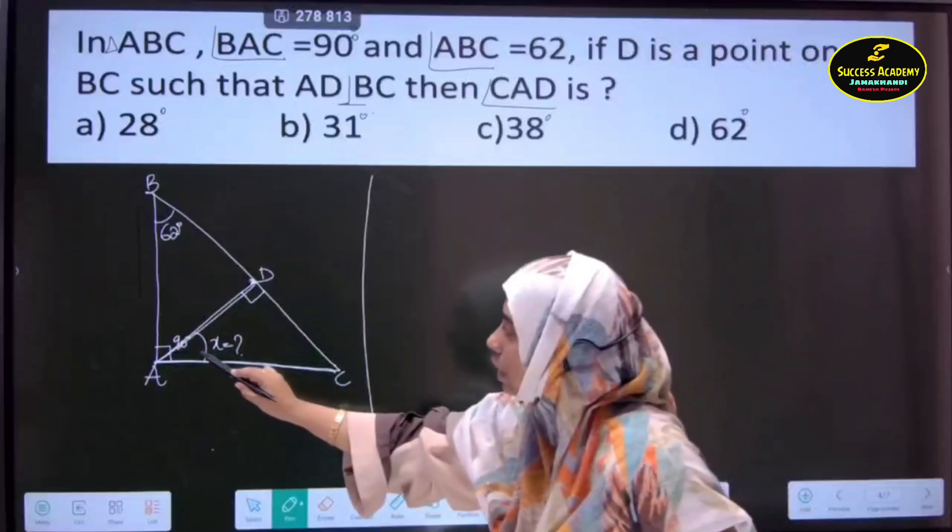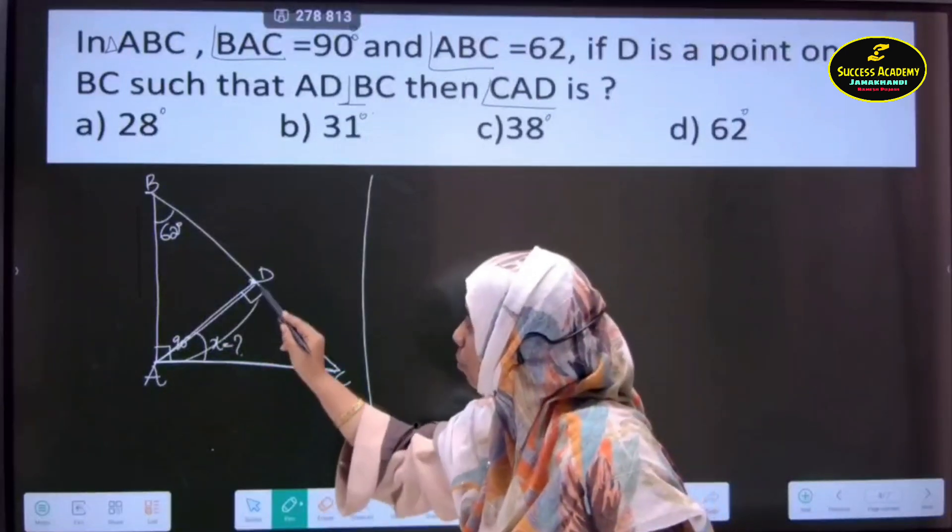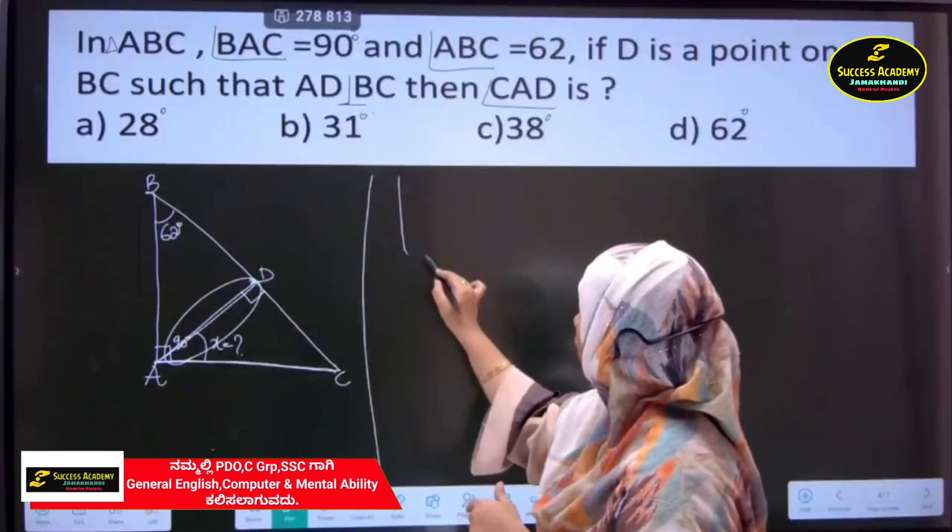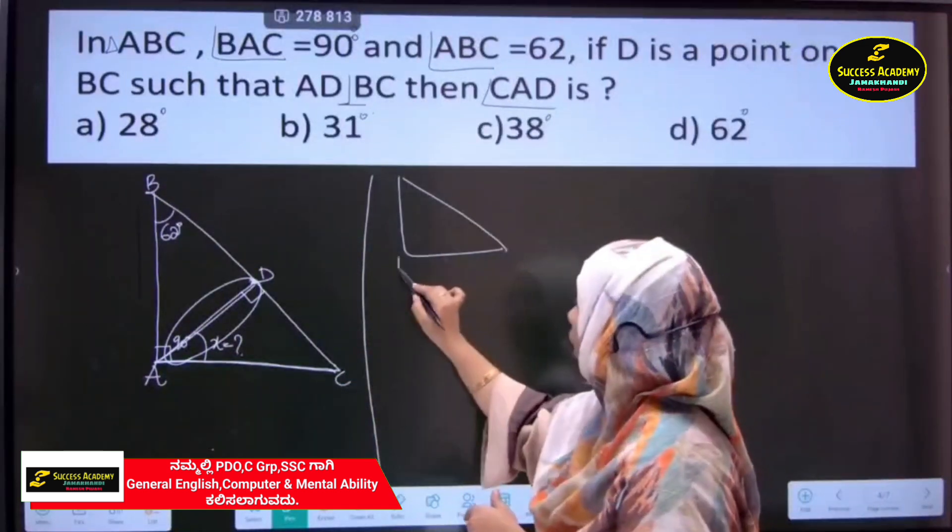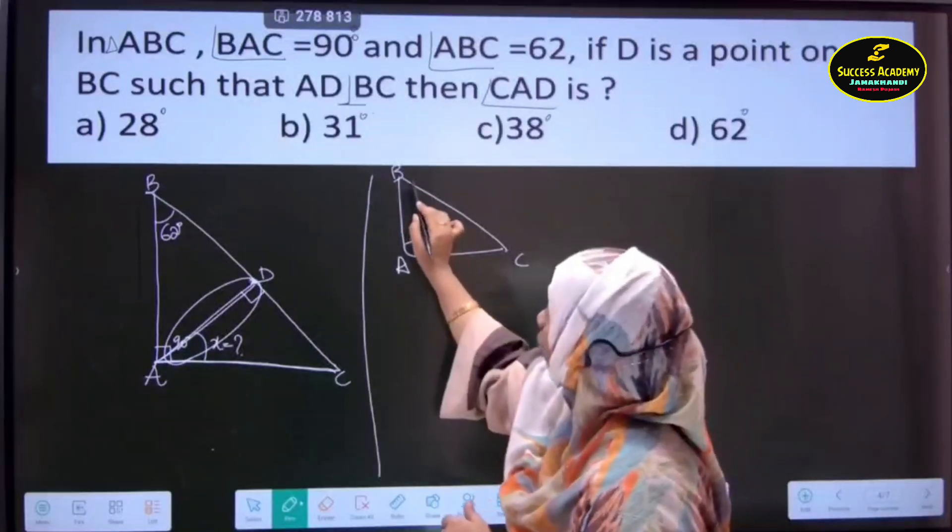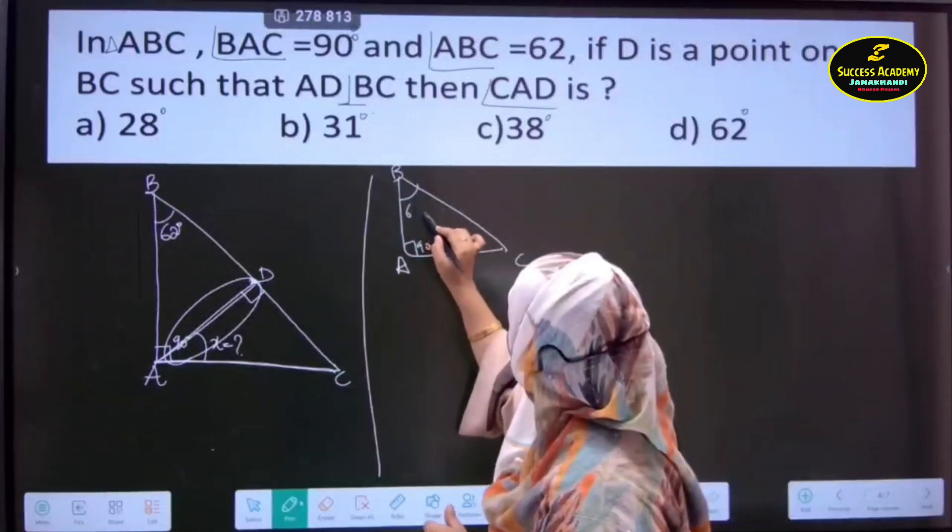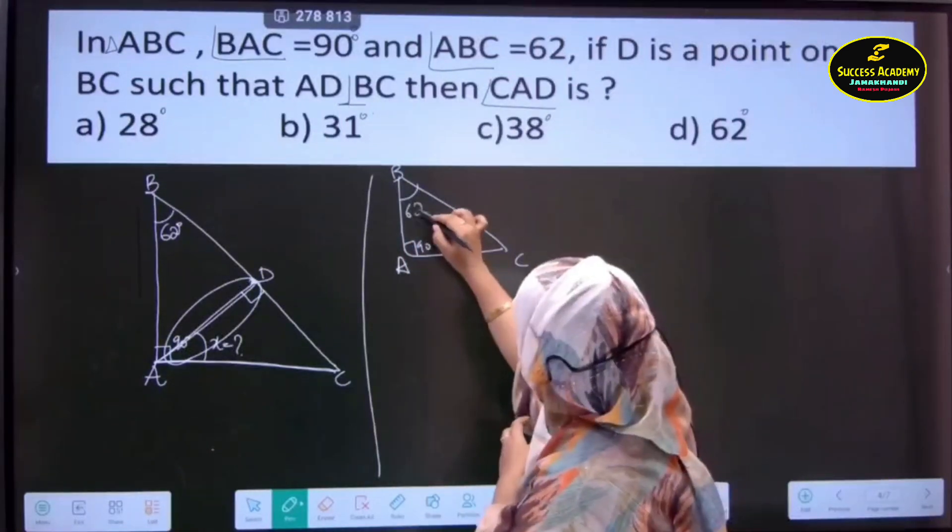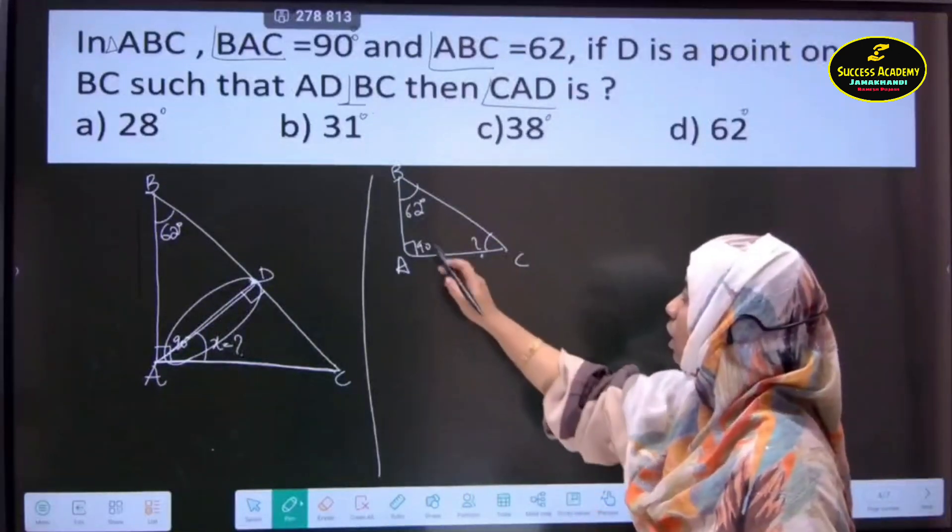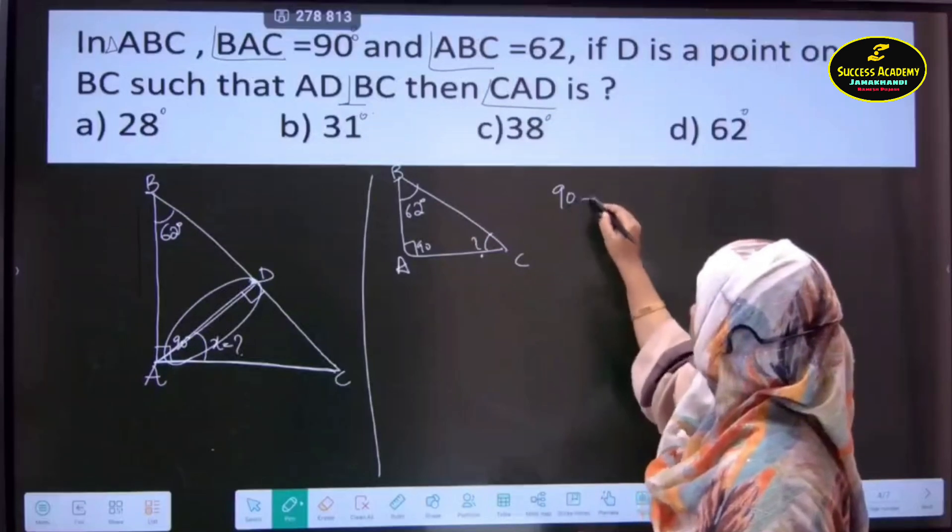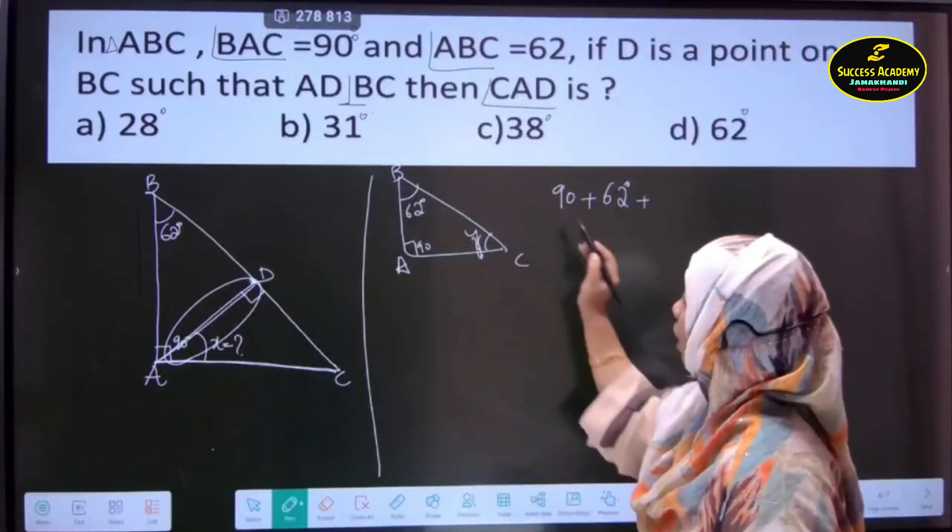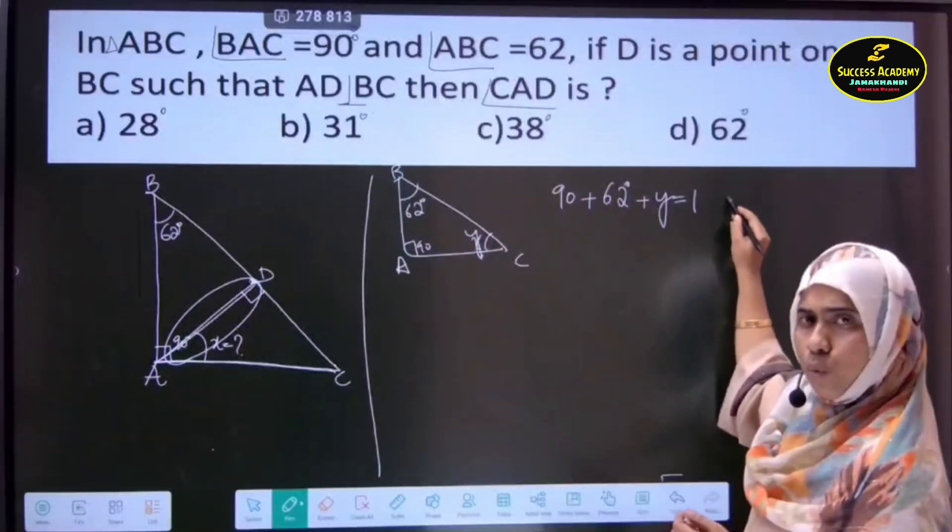To find this angle, let us consider, suppose we have not made this construction only. Let us take the original triangle. What is the original triangle? This A, B and C. This is 90 degrees. This is your 62 degrees. 62 degrees and this is how much? As per the property of interior angle of a triangle, 90 plus 62 plus something let me take it is Y. Plus Y is equal to how much in total? 180.